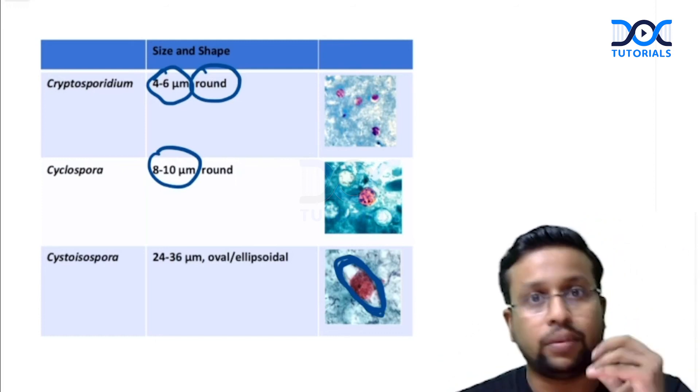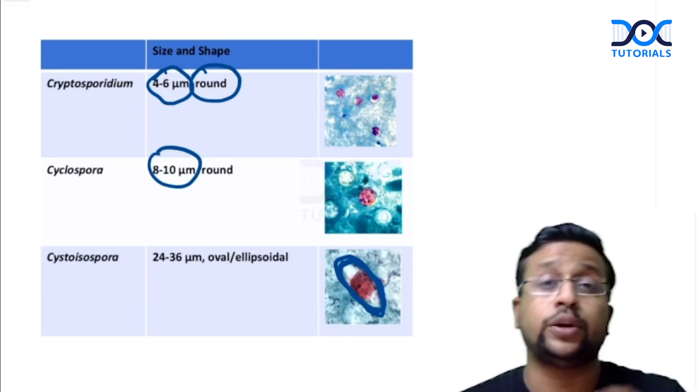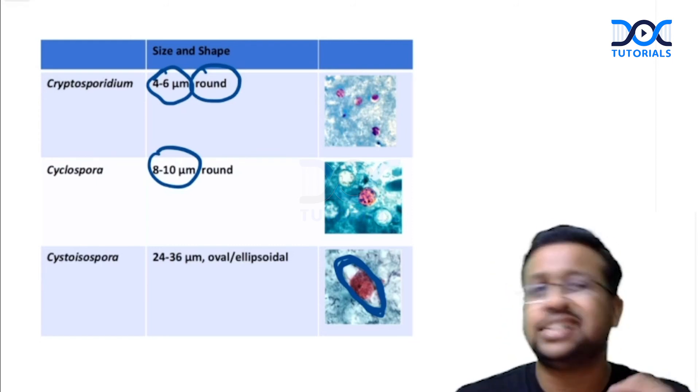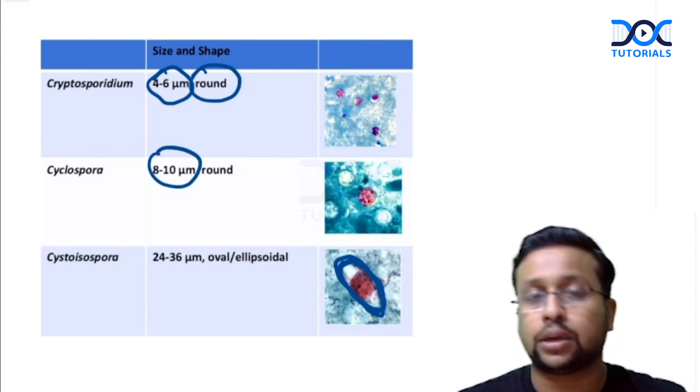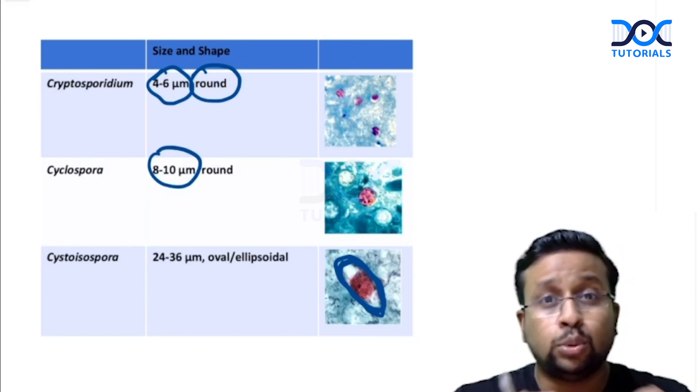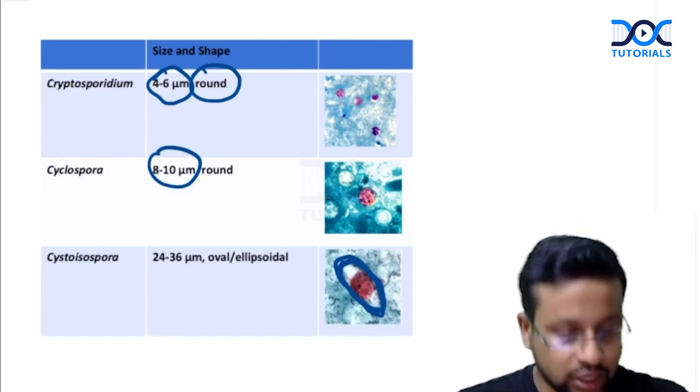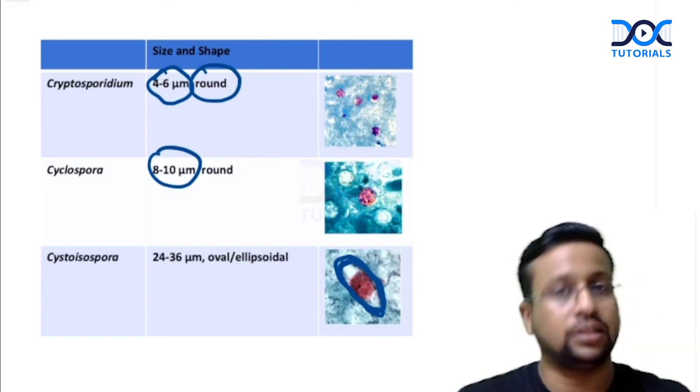These are the 3 main organisms, and then we have Microsporidia which are much smaller and usually not very easily detectable by light microscopy. But you can use specific stains called Chromatrope stains to detect these organisms. They are much smaller than all the other 3.